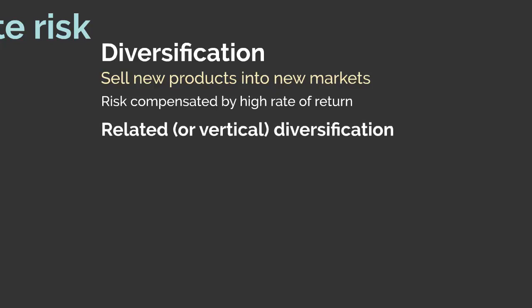Diversification can take multiple forms. The first is related or vertical diversification — it's called 'related' because it involves diversification into products and markets that are new but in some way related to the entity's existing operations. The most common instance of related diversification is through vertical integration, which refers to the extent that an entity owns its upstream suppliers and downstream buyers.